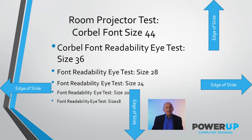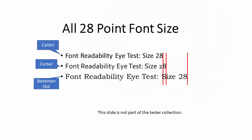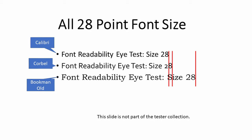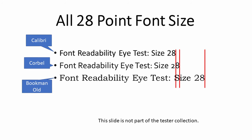Another change on slide tester number two is that I've employed a different font called Corbel. Different font families have different characteristics and emotion, plus a compactness of space between letters. Take a look at this sample slide, which is not included in our projector tester slides, but it helps us understand that different fonts have different kerning and spacing results.